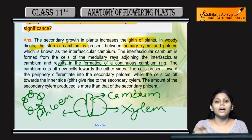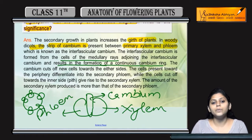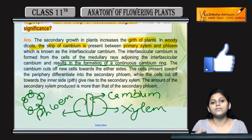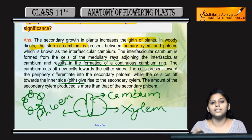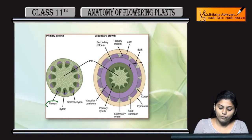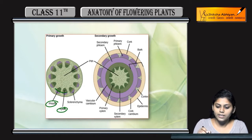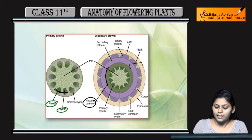ये अंदर की side भी और बाहर की side भी division कराता है — cells को cut करता रहता है। बाहर की side को ये बनाता है secondary phloem और अंदर की side को बनाता है secondary xylem। इस diagram में आप देखेंगे — phloem है, xylem है और इनके बीच में interfascicular cambium है। इससे medullary rays और vascular cambium ring बनता है।